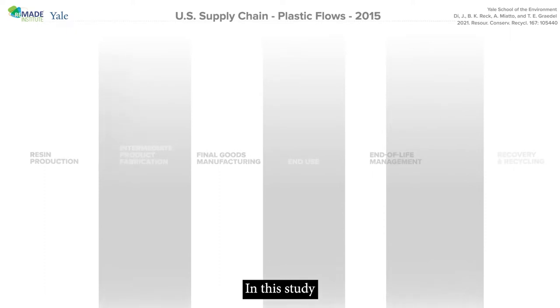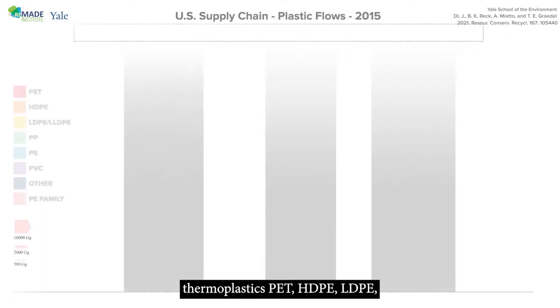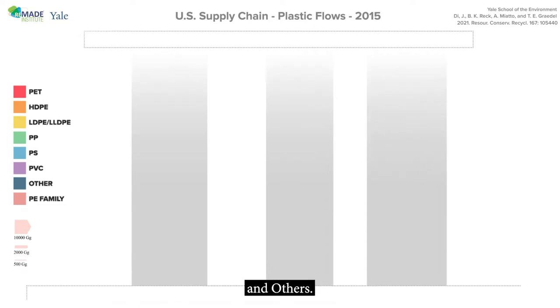In this study, we focused on the seven main thermoplastics: PET, HDPE, LDPE, polypropylene, polystyrene, PVC, and others.